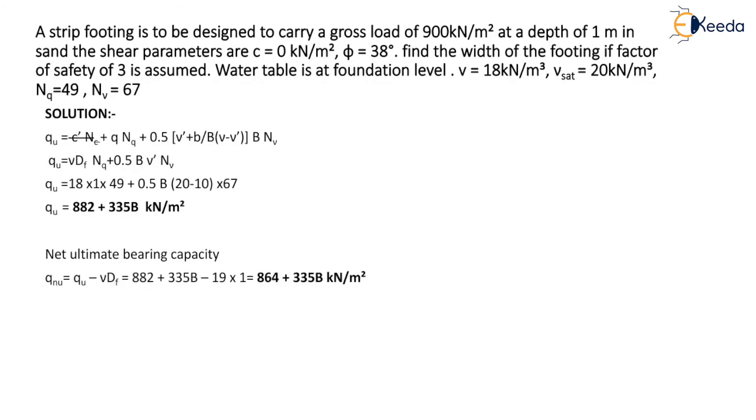Now gross bearing capacity is equal to net safe pressure plus overburden pressure that means qs is equal to q Ns plus gamma df which is equal to 102.3 plus 18 x 1 which is equal to 120.3 kN per meter square.